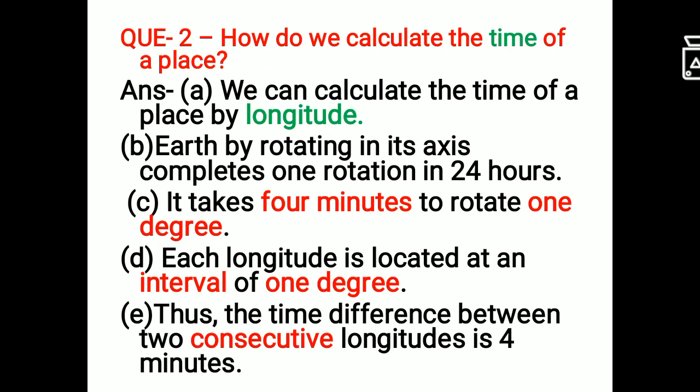If you will do a calculation, then you can calculate it. So it takes 4 minutes to rotate 1 degree and each longitude is located at an interval of 1 degree. Thus, the time difference between the two consecutive longitudes is 4 minutes.